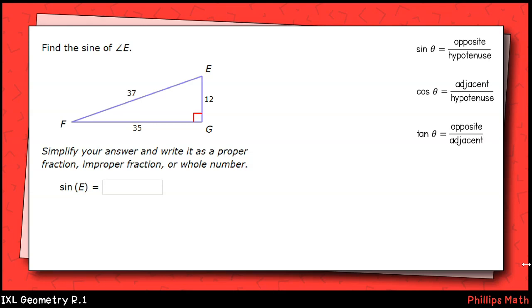This first question asks us to find the sine of angle E and state our answer in simplified fraction form, so not a decimal approximation. The sine of an angle is the ratio between the side opposite that angle and the hypotenuse of the right triangle. For angle E, that will be 35 over 37. Since that fraction doesn't simplify any further, that will be our final answer.